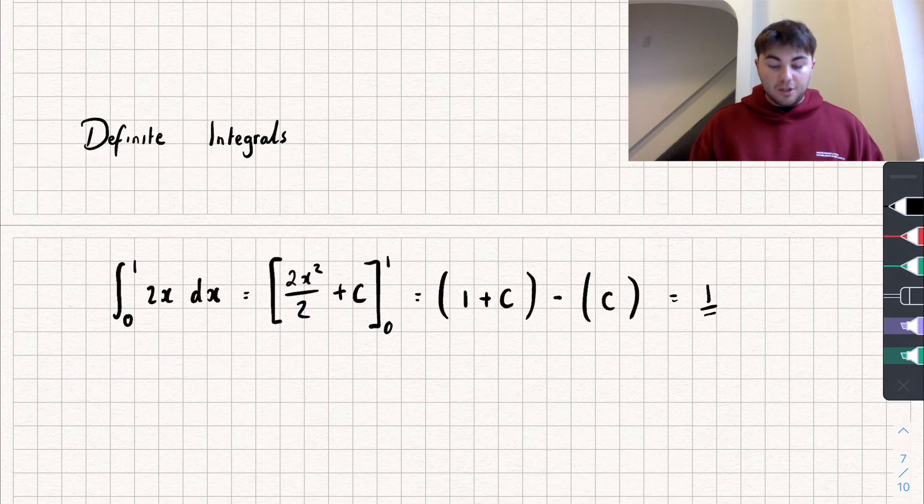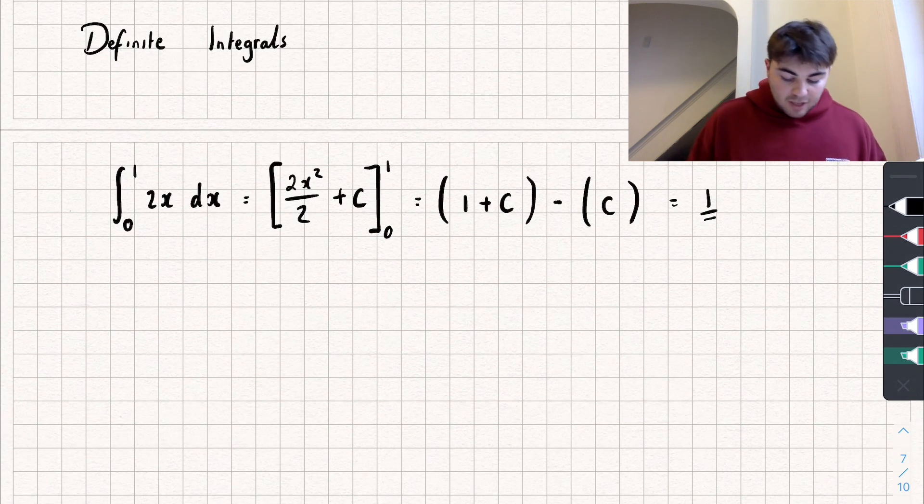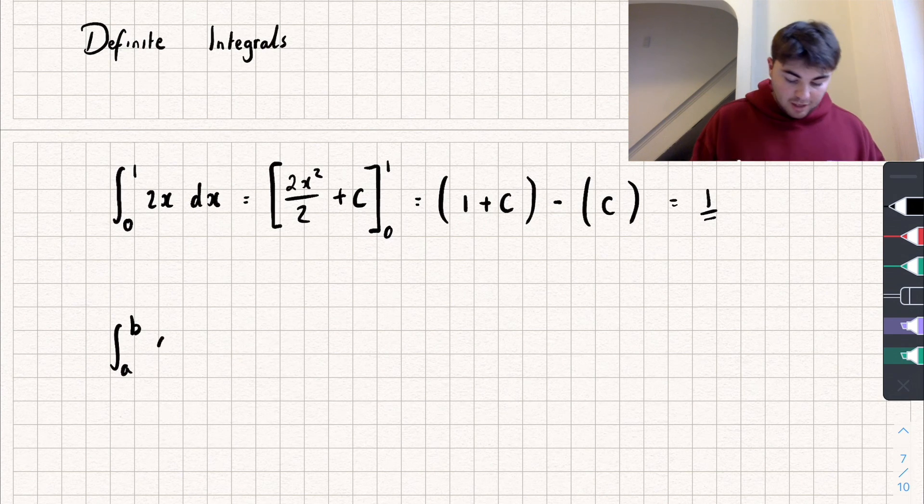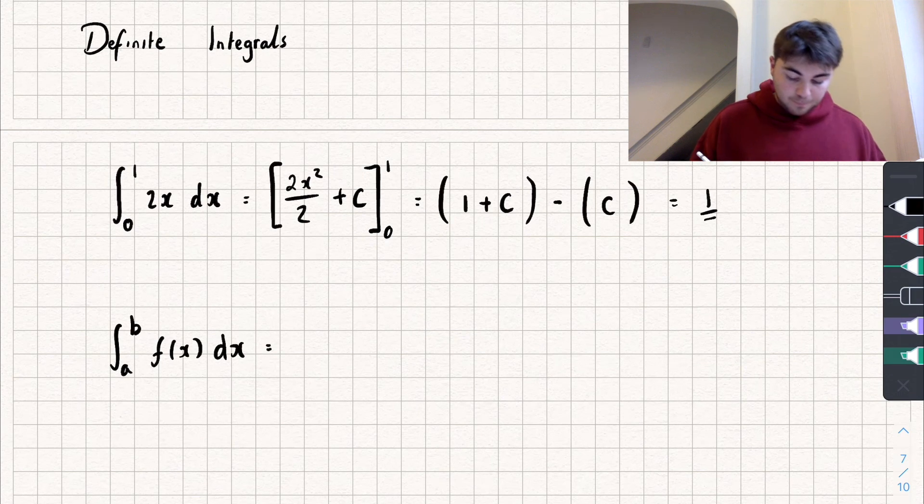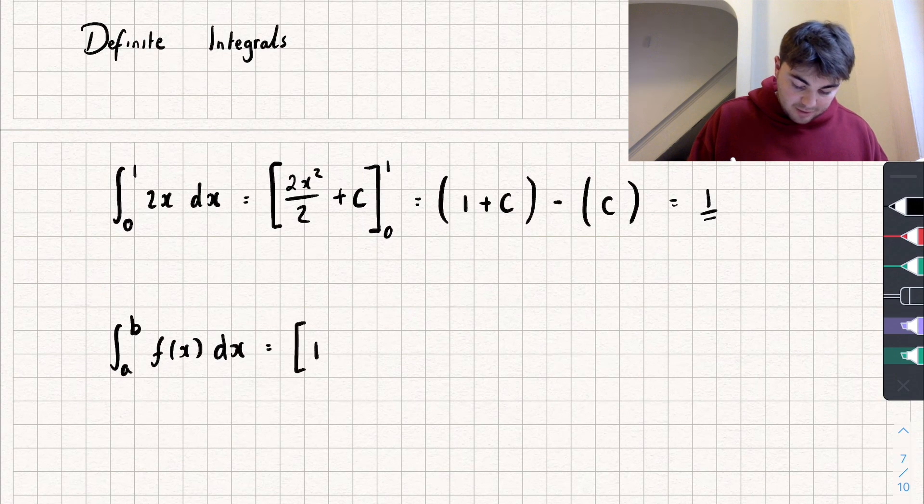So there is a standard rule that we can use for definite integrals and it comes from what we call the fundamental theorem of calculus which is what you'll cover if you do maths at university. And so say we're integrating between a and b a generic function f of x. Now say when I integrate f of x my answer is capital F of x and you'll see these steps are very similar to the one above.